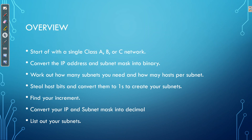Starting from beginning to end, we start with a single Class A, B, or C network and then we convert the IP address and subnet mask into binary. We then work out how many subnets we need and how many hosts per subnet we need. We then steal those host bits and convert them into ones to create subnets. We find our increment, which tells us what our next subnet ID is — that is just an IP address to represent the subnet. We then convert the IP address and subnet mask back into decimal, and we will have a new subnet mask. The last step: list out all of our subnets.